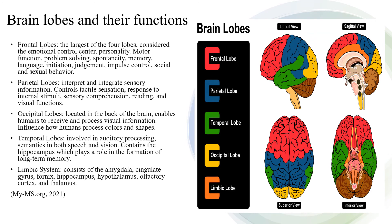The human brain consists of four lobes and the limbic system, each playing an important role in how we function. The frontal lobe is the largest of the four lobes, considered the emotional control center and responsible for our personality. Motor function, problem solving, spontaneity, memory, language, initiation, judgment, impulse control, and social and sexual behavior all come from the frontal lobe.